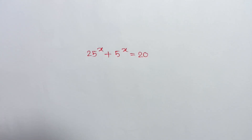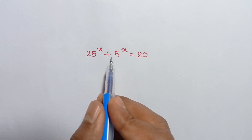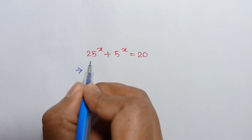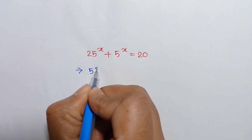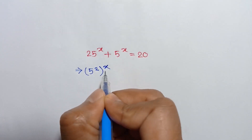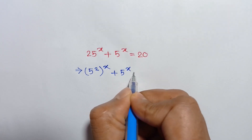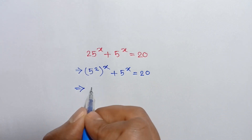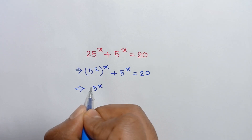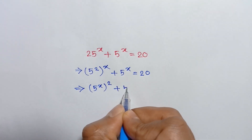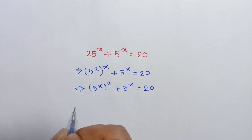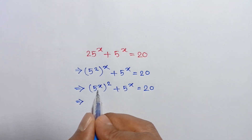Hi everyone. In this video I am going to show how to solve 25 to the power x plus 5 to the power x is equal to 20. 25 can be written as 5 squared, whole to the power x, plus 5 to the power x is equal to 20. It can be written as 5 to the power x, whole squared, plus 5 to the power x is equal to 20.